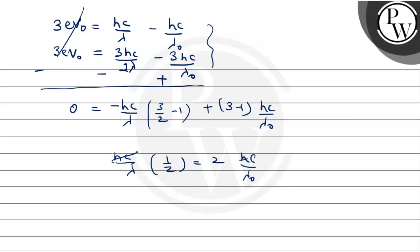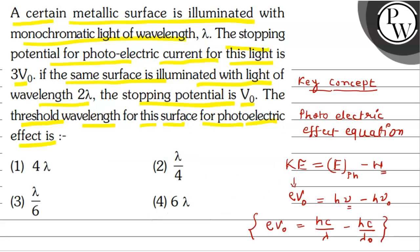HC cancels on both sides, 2 moves across, and we get: λ₀ = 4 lambda. This is our answer. Let's see which option it matches — this is option number 1. This is the right option. I hope you understood it well. Best of luck. Thank you.